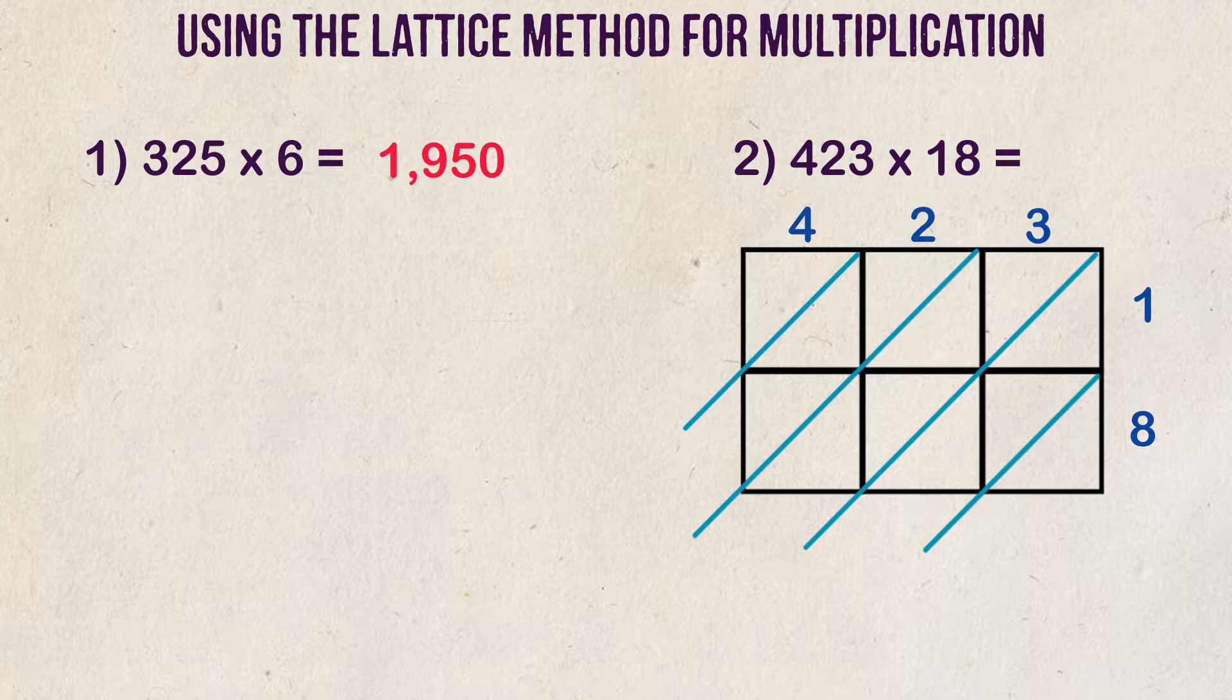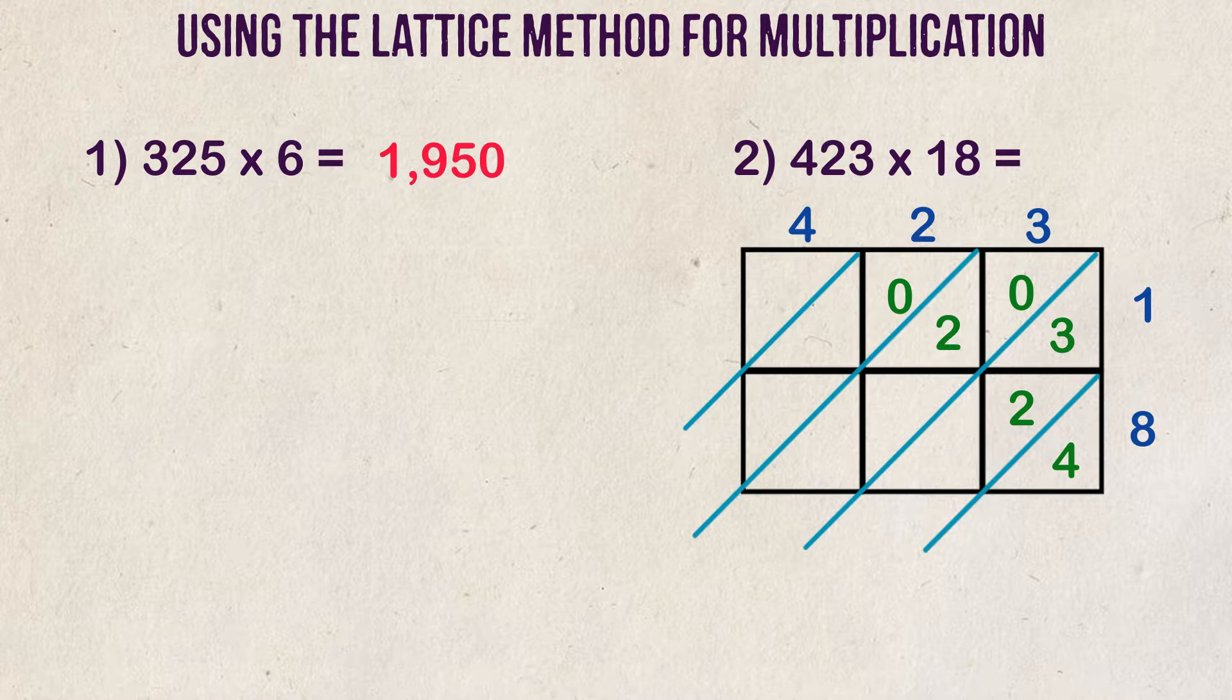3 times 1 is 3. The way we write a single digit is to put 0 up top and 3 at the bottom. 3 times 8 is 24. Next column, 2 times 1 is 2. 2 times 8 is 16. Last column, 4 times 1 is 4. And 4 times 8 is 32.